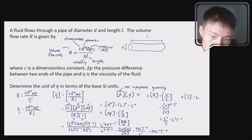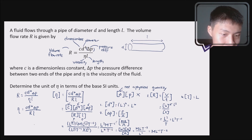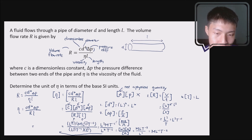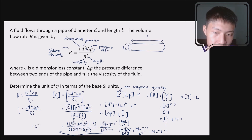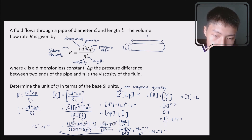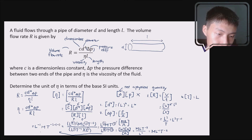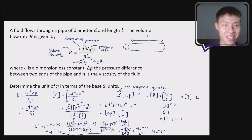So three minus four is L⁻¹. M is M. T negative two minus negative one — that is negative two plus one — so T⁻¹. Therefore the dimension of viscosity eta is M·L⁻¹·T⁻¹. That's the dimension for this viscosity eta.